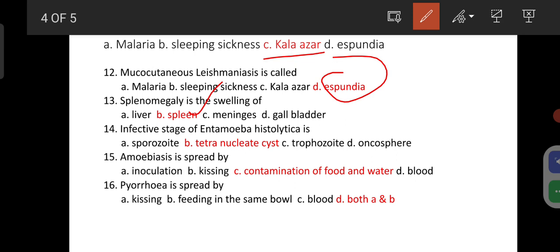Infective stage of Entamoeba histolytica is Tetranucleate cyst. Amoebiasis is spread by Inoculation, Kissing, Contamination of Food and Water, Blood. And out of these four, Contamination of Food and Water is the main reason for the spread of Amoebiasis.